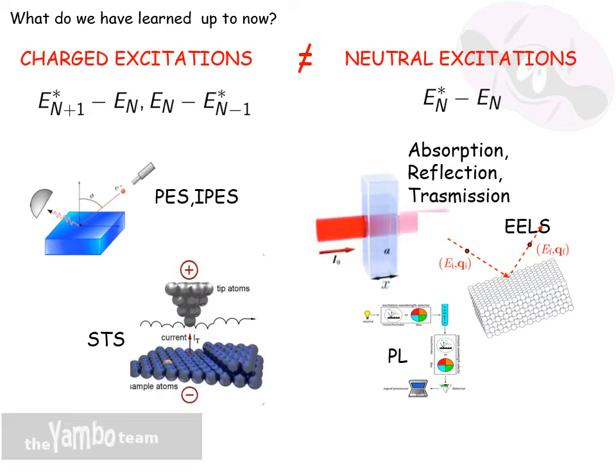Note also that among the spectroscopies related to neutral excitations, I mention here also the photoluminescence, which is indeed a tool frequently used to probe nanomaterials. But since it is formally an out-of-equilibrium process and quite often involves the interaction with the phonons of the system, I will skip discussing it during this introductory presentation.